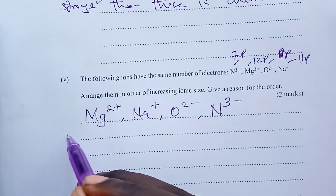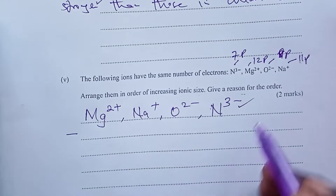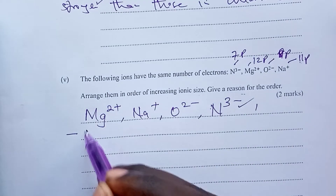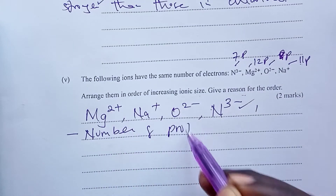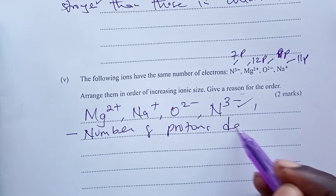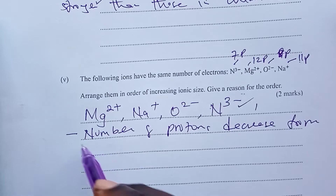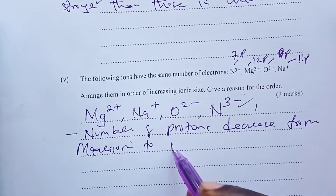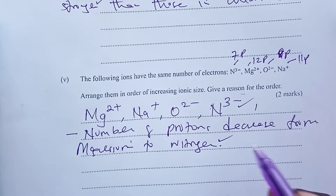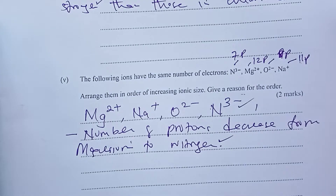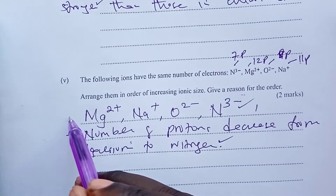The order is one mark and the reason is another mark. The reason is that the number of protons decreases from magnesium to nitrogen. Someone could also state that nuclear attraction for outer electrons decreases from magnesium to nitrogen.